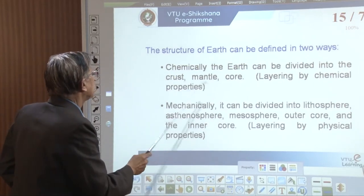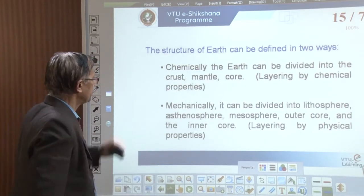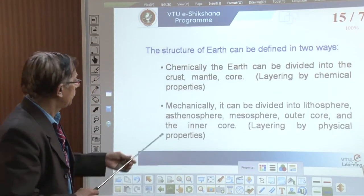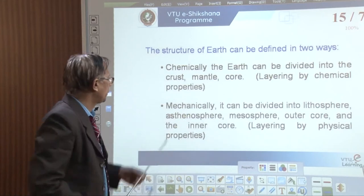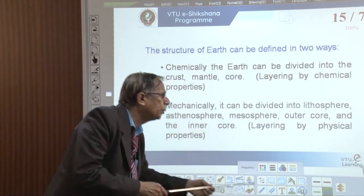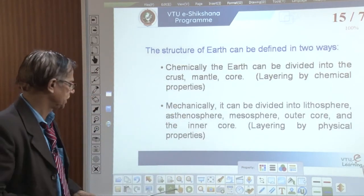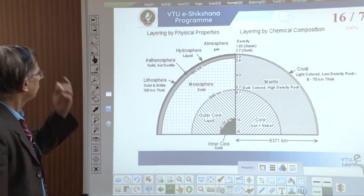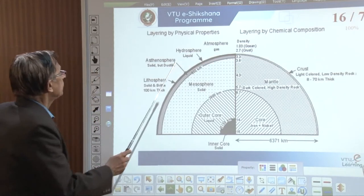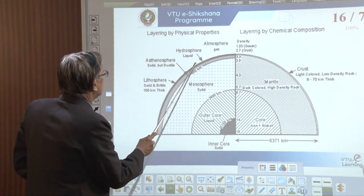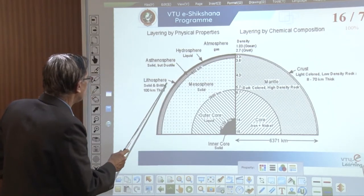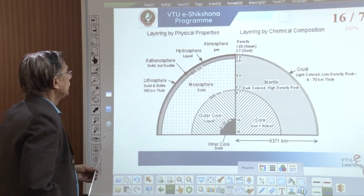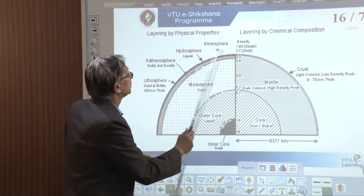Basically, based on mechanical and chemical properties, we divide the earth. Chemically we have three important layers; mechanically we may have more layers. The outermost layer — the crust or lithosphere — is solid and brittle. Within the crust, there are depressions where we have the ocean, averaging about 3,000 meters depth, with the Pacific being the greatest.